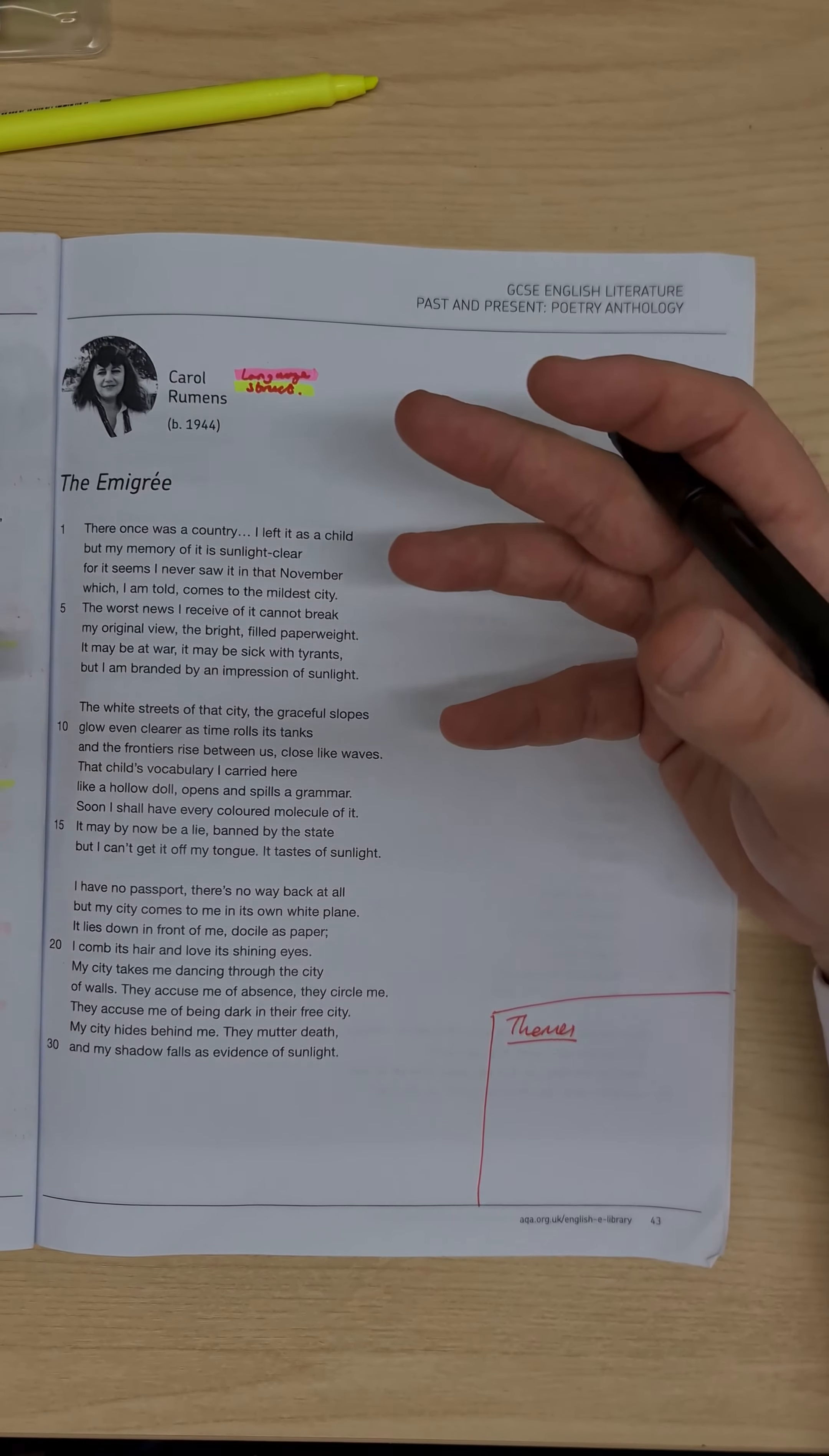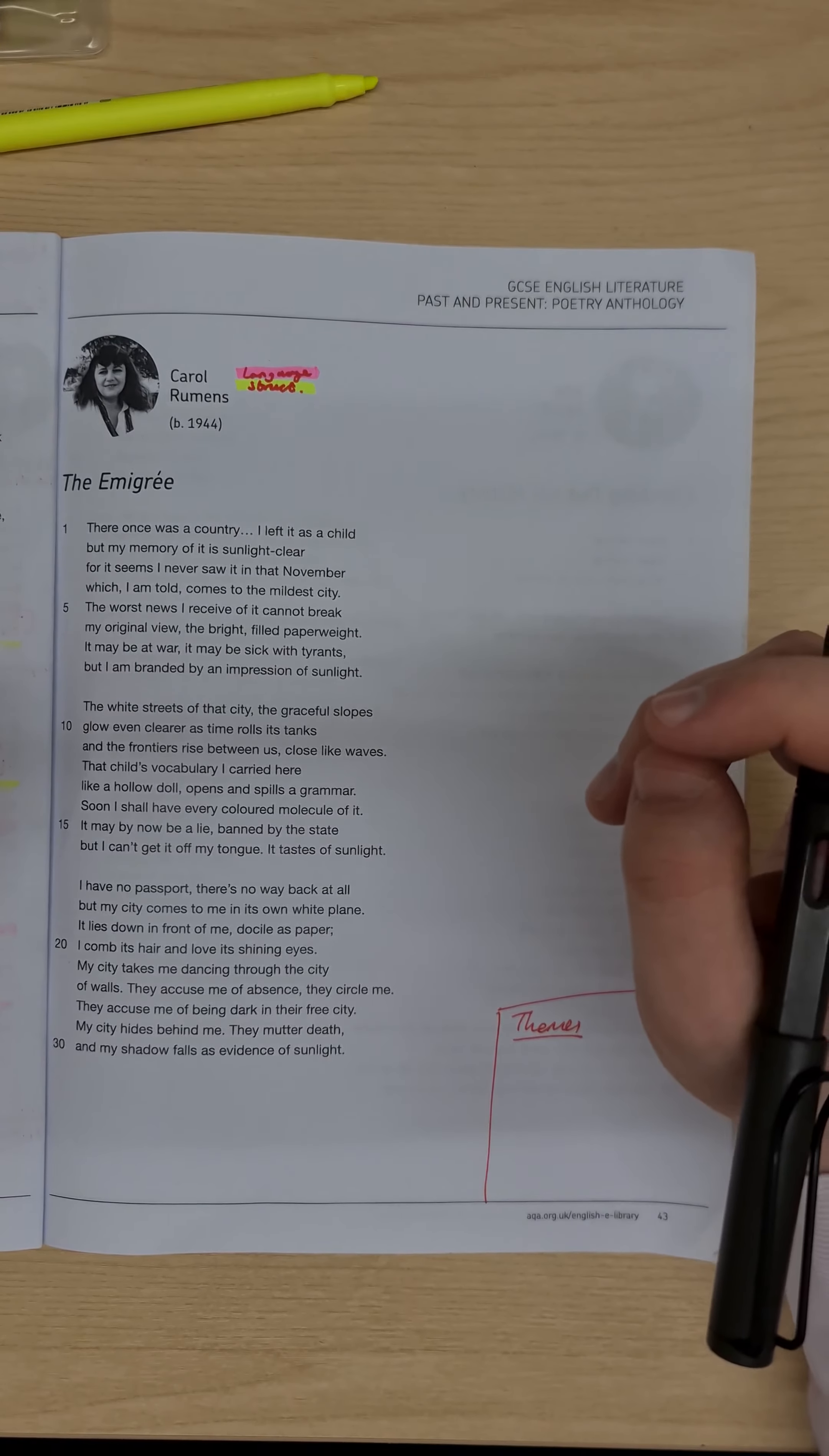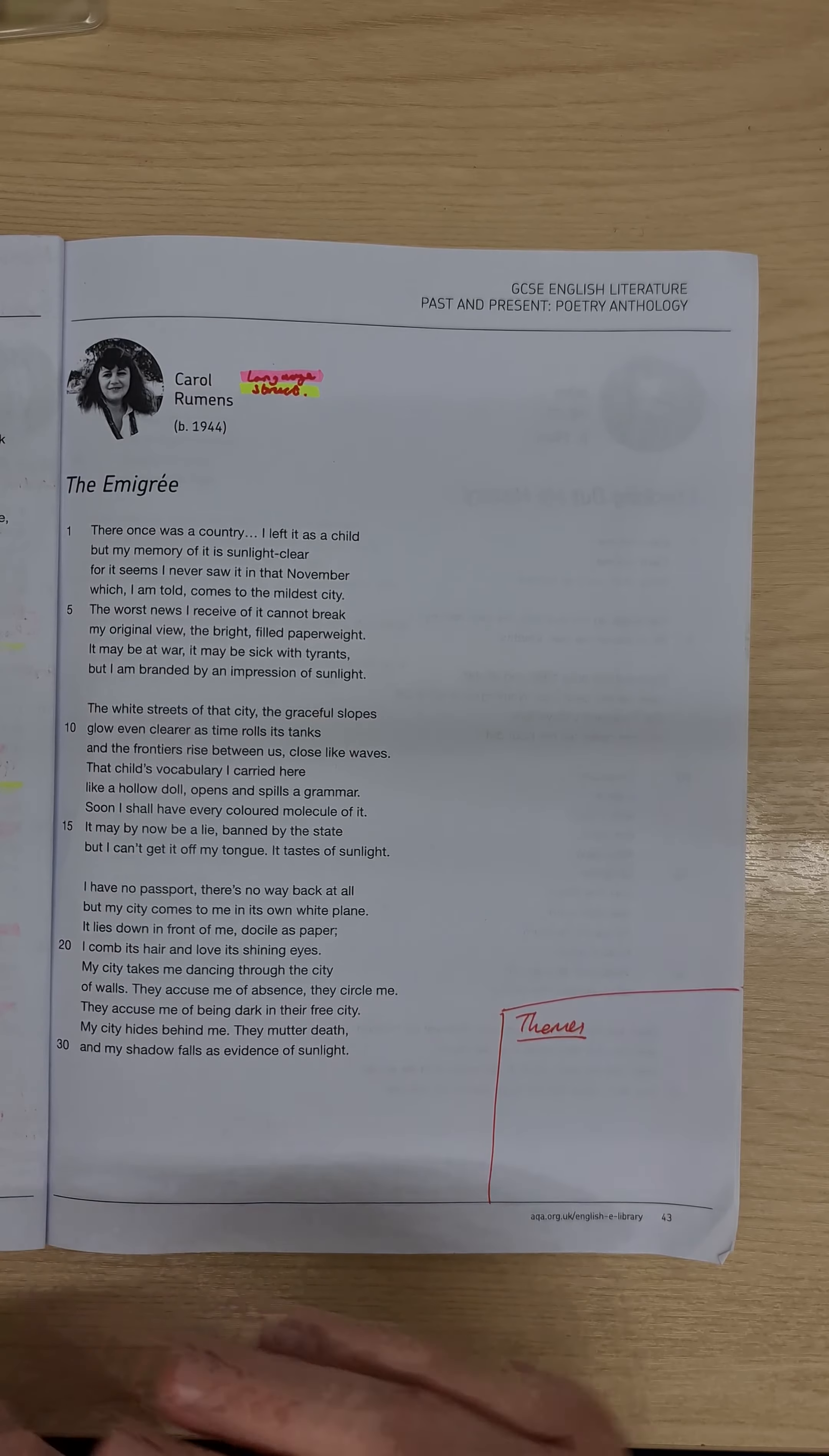Carol Rumens is an English poet, she's a lecturer, and she's a translator. She's had over 15 collections of poetry published, as well as several novels and several plays. The Emigre was written in 1993, and it was in the collection called Thinking of Skins. Starting off then, we go straight away in with a structural note.